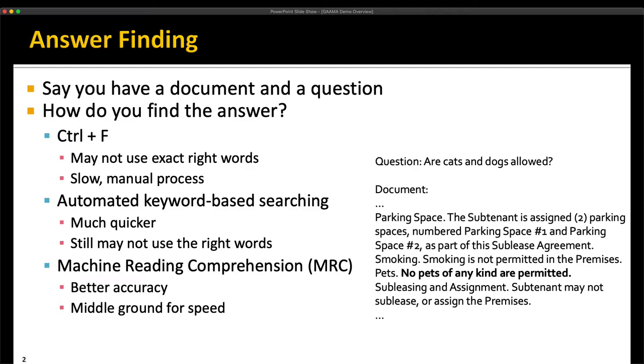What Gamma does is provide answer finding by machine reading comprehension, or MRC for short, which has better accuracy and a middle ground between the two previous methods on speed, which can get the correct answer that is no pets of any kind are permitted.